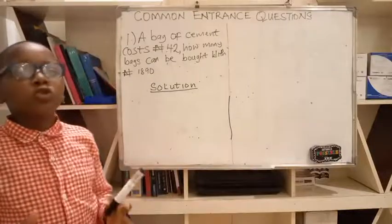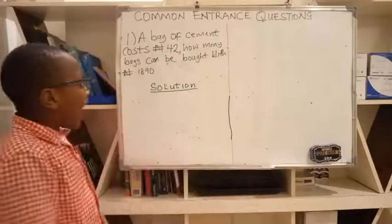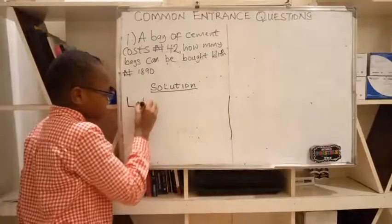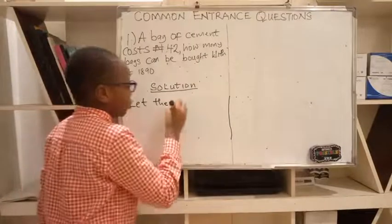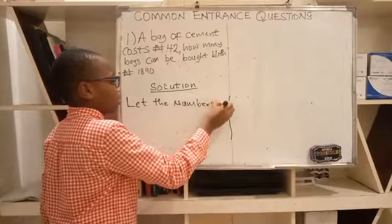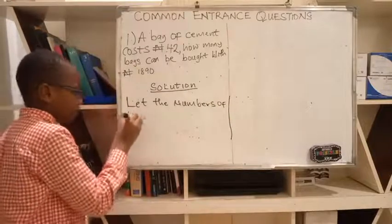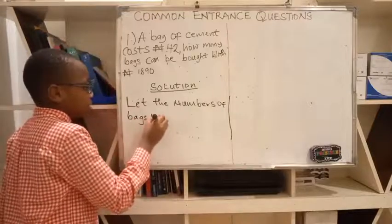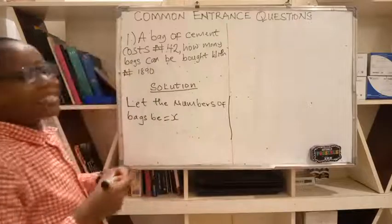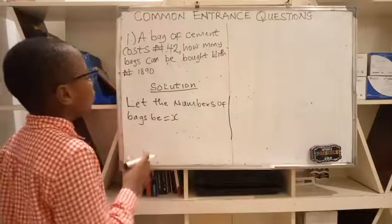Let us find the two main parameters because it is based on the money and the bag of cement. So let the number of bags be X. You can write any alphabet of your choice but I'll just write X.